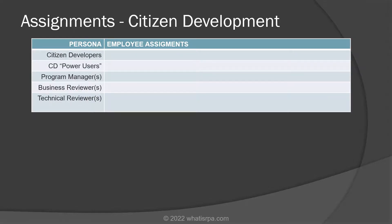You also might need business reviewers and technical reviewers for the citizen development workflow. I know that was a lot and it might be hard to conceptualize since you haven't really seen the tool yet. But hopefully it gave you some big-picture ideas about how sophisticated Automation Hub actually is and how much value it will add to your organization. So with that, let's jump into the setup section to create our Automation Hub account and start using it.